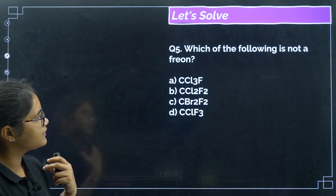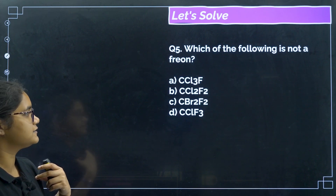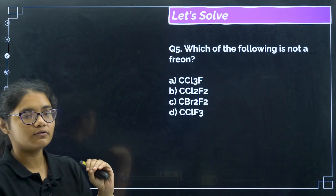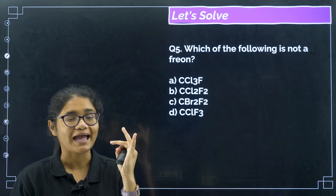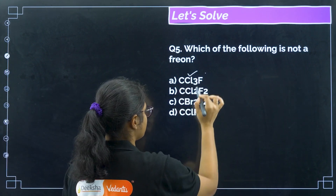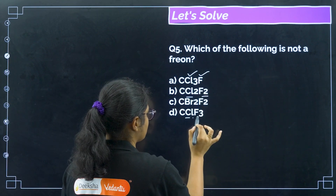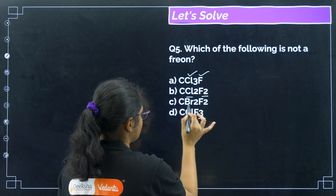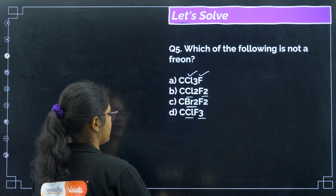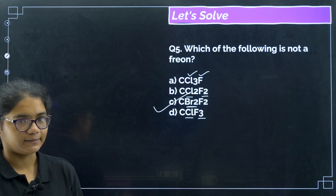Question 5: which of the following is not a freon? In freons, we have chlorine and fluorine compounds. Looking at the options — chlorine and fluorine are present in options A, B, and D — but option C contains bromine instead of fluorine, so that is not a freon. Correct answer is option C.